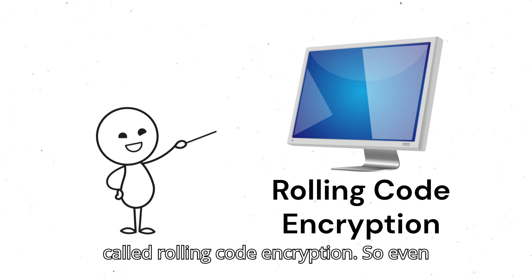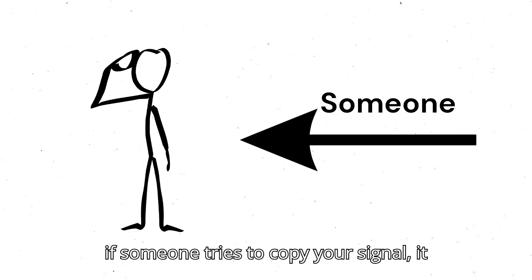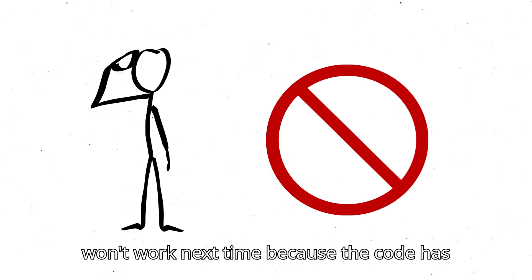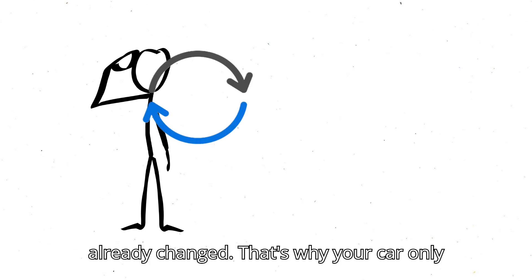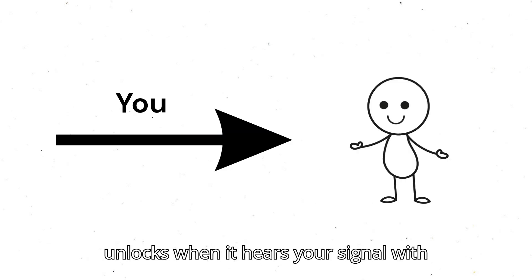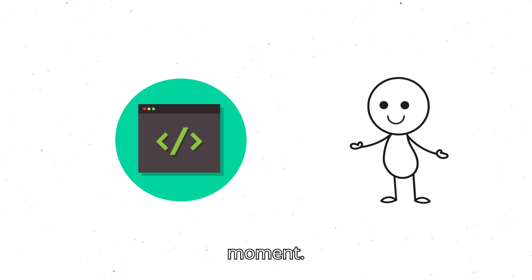That system is called rolling code encryption. So even if someone tries to copy your signal, it won't work next time because the code has already changed. That's why your car only unlocks when it hears your signal with the correct rolling code at that exact moment.